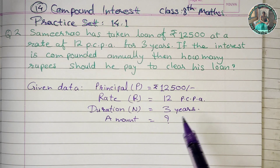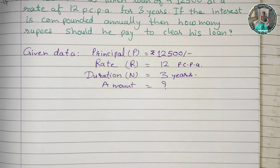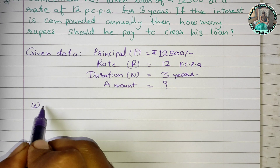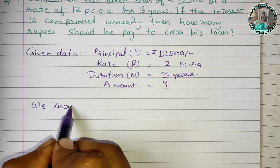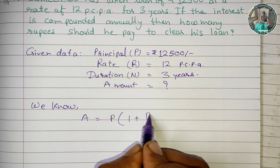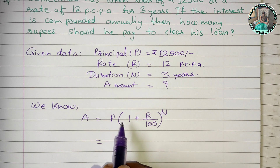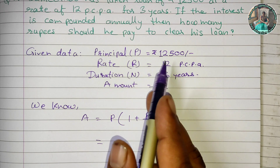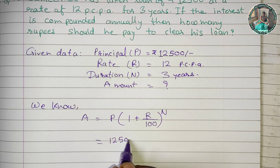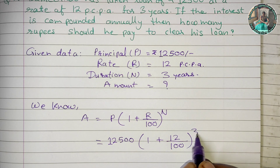Now the formula. We know that Amount A is equal to P into (1 plus R upon 100) raised to N. So substituting: A = 12,500 × (1 + 12/100)^3.